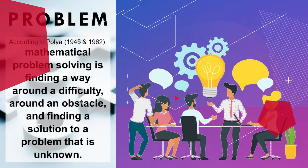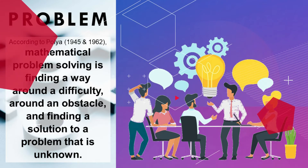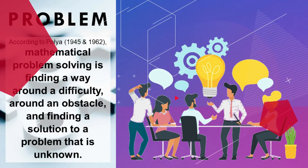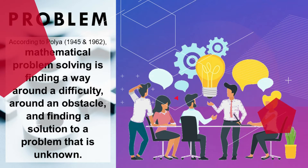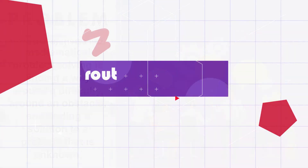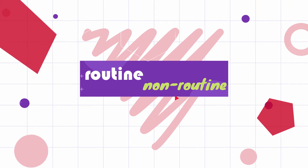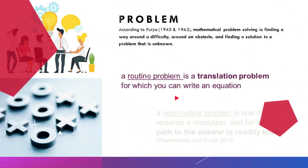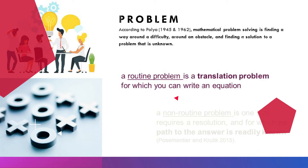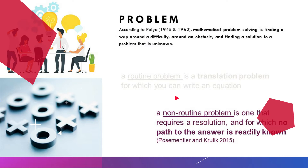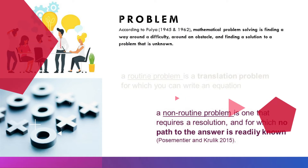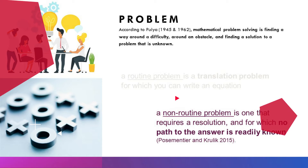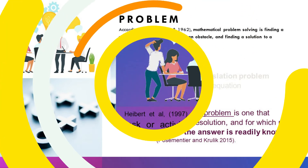Let's define a problem. A mathematical problem is a situation that requires a solution. It can be routine or non-routine. A routine problem is a translation problem for which you can write an equation, while a non-routine problem is one that requires a resolution and for which no path to the answer is readily known.